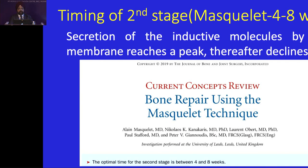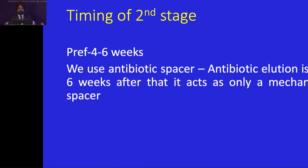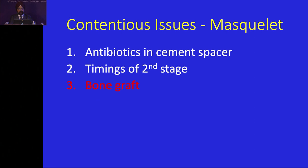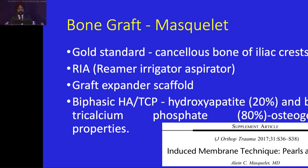The second burning issue is the timing of the second stage. According to Masquelet, he used to do the second stage in 4 to 8 weeks, because the secretion of inductive molecules by the membrane reaches a peak and then declines. What we do is prefer doing it in 4 to 6 weeks because we are using antibiotic spacer, and the antibiotic elution is for 6 weeks — after that it acts only as a mechanical spacer. The third burning issue was bone graft. Masquelet used only cancellous bone graft from the iliac crest.